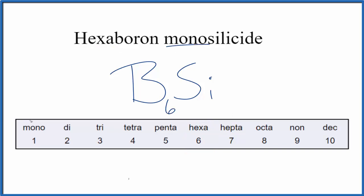And then mono, mono means one. So we just have one of the silicon atoms here. And by convention, we don't write one, it's just assumed to be there. So the formula for hexaboron monosilicide is B6Si.